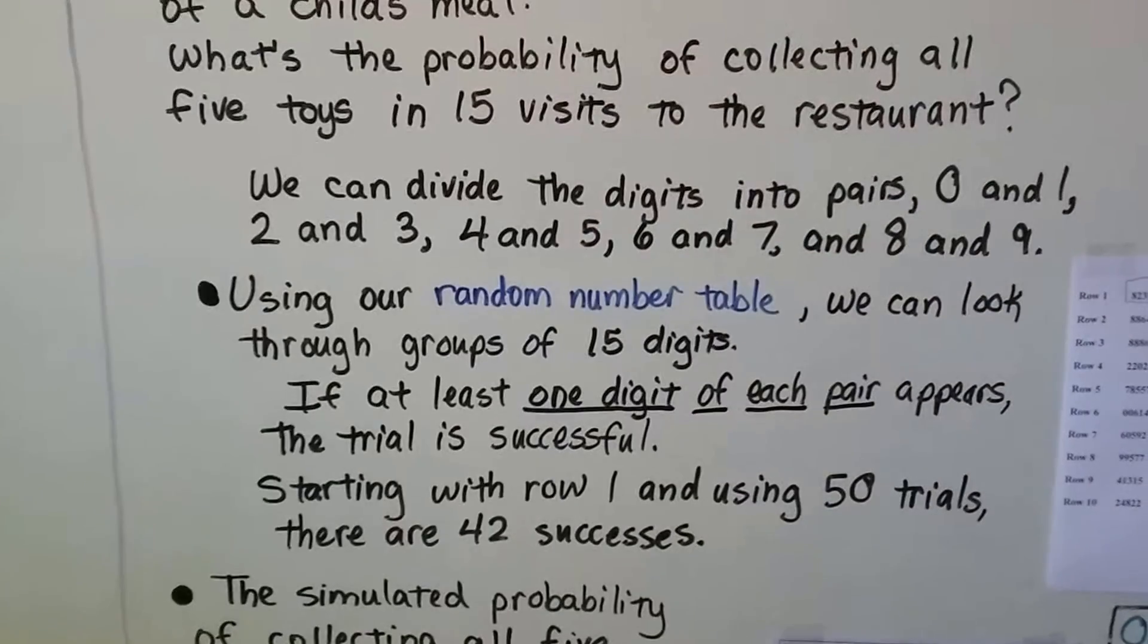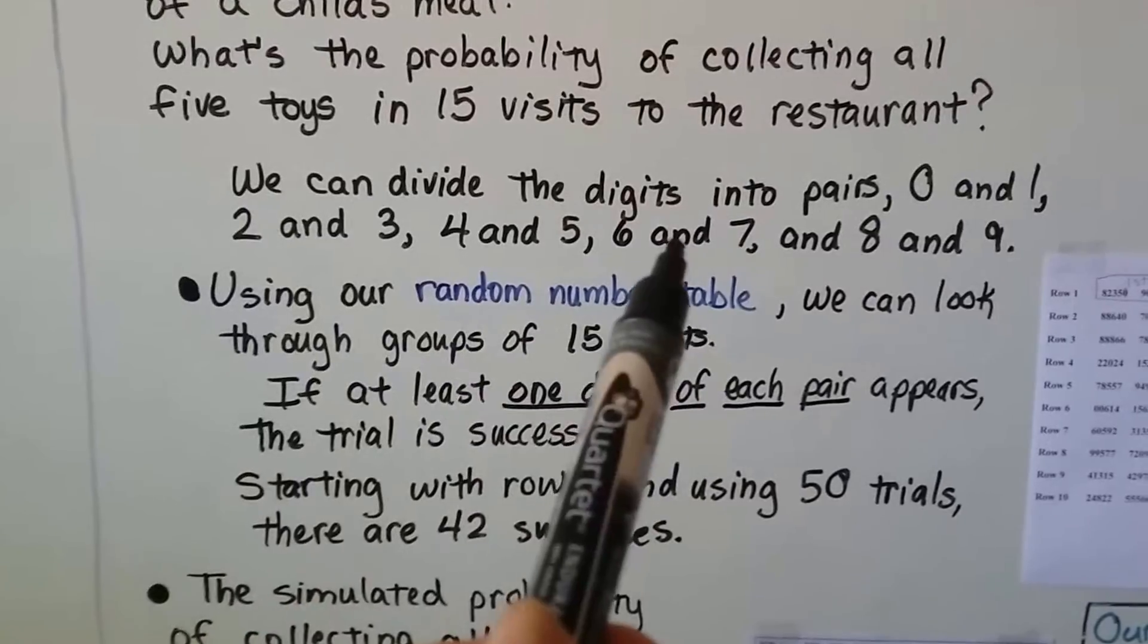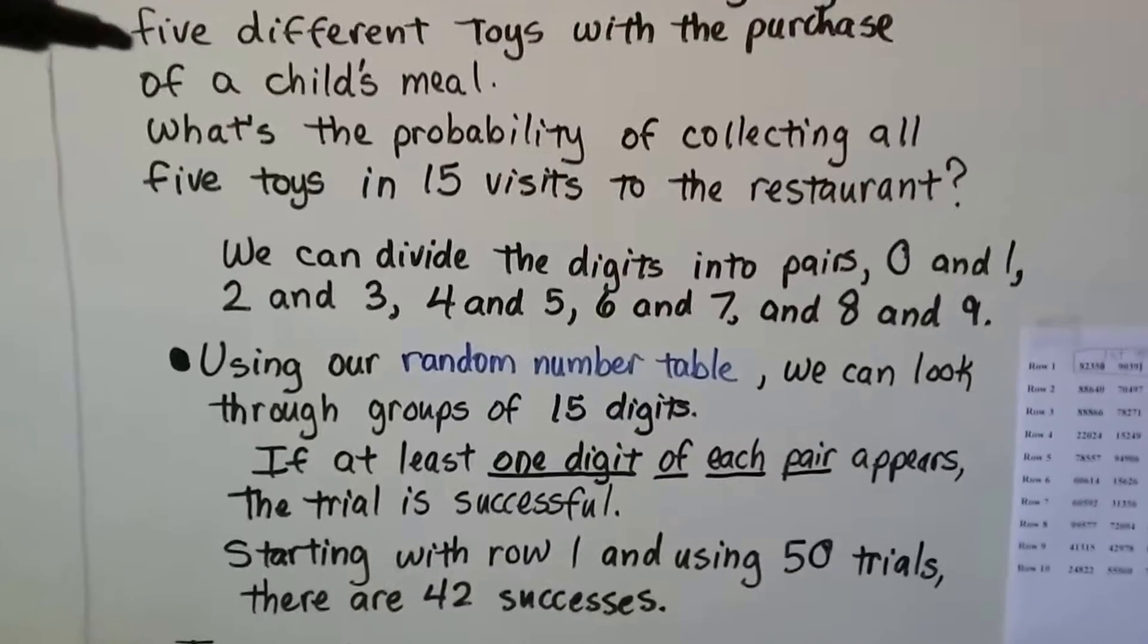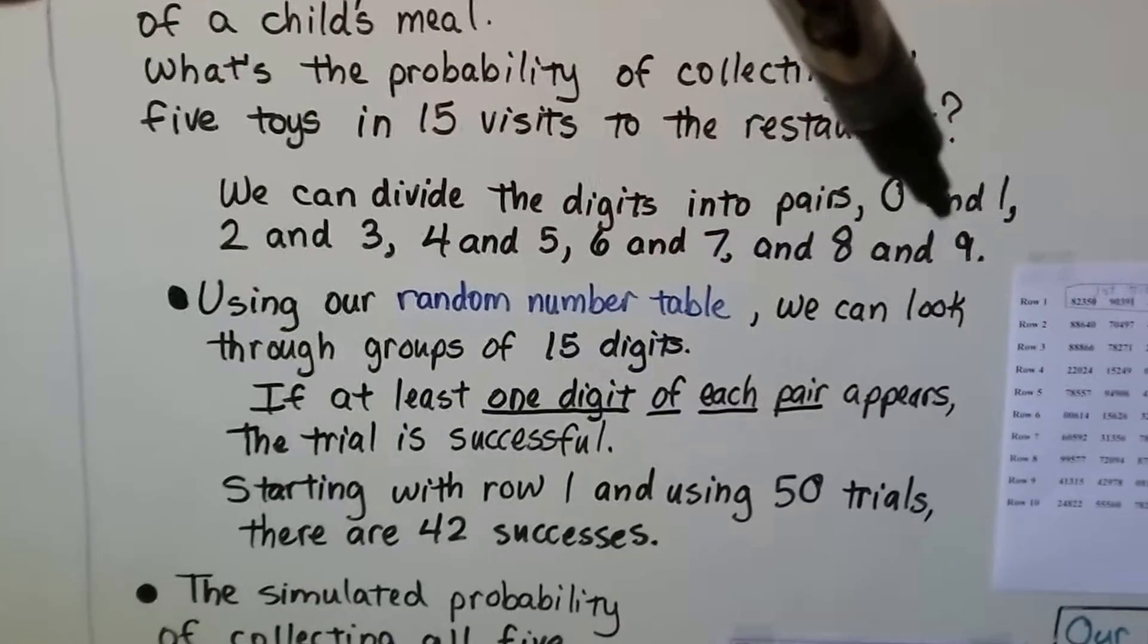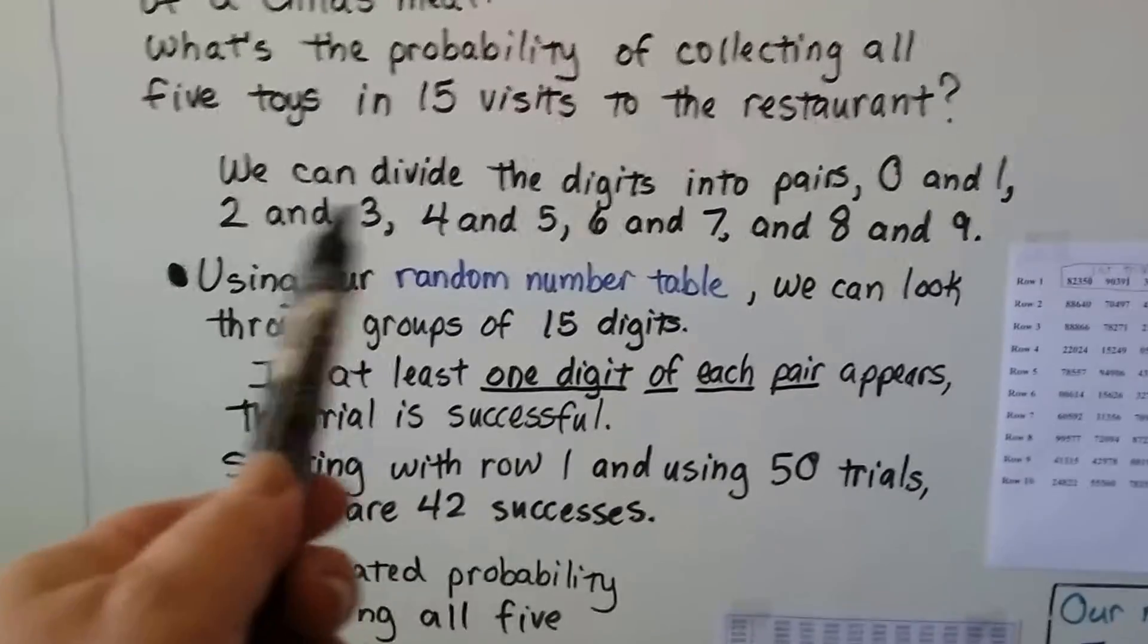We can divide the digits into pairs of 0 and 1, 2 and 3, 4 and 5, 6 and 7, and then 8 and 9. And that would be the toys. There's five toys. So that would be one toy, two toys, three toys, four toys, five toys by putting them together.